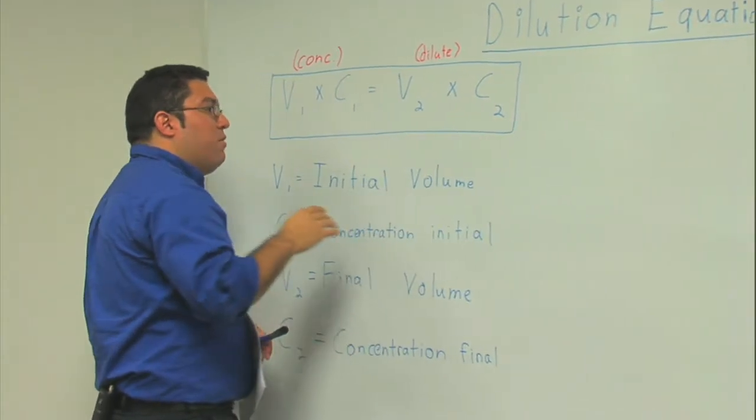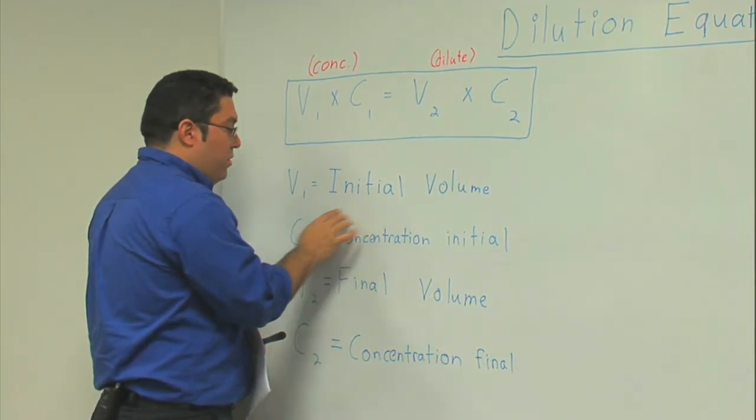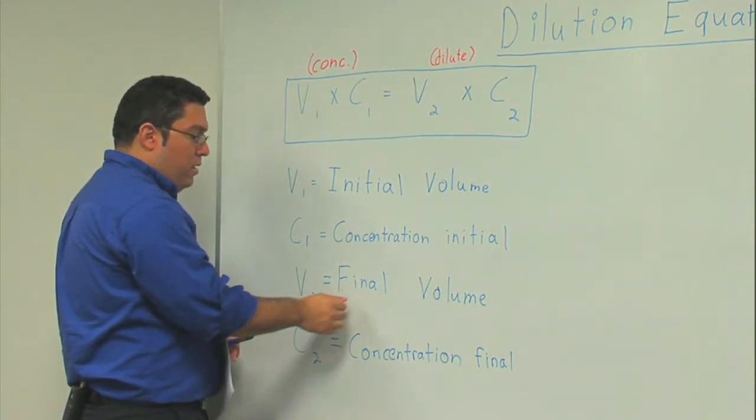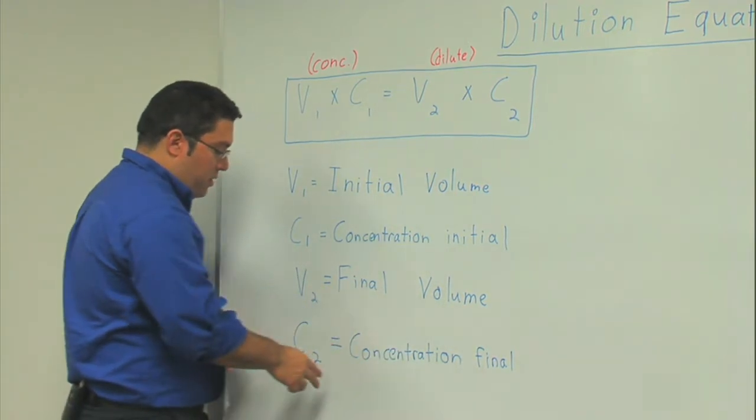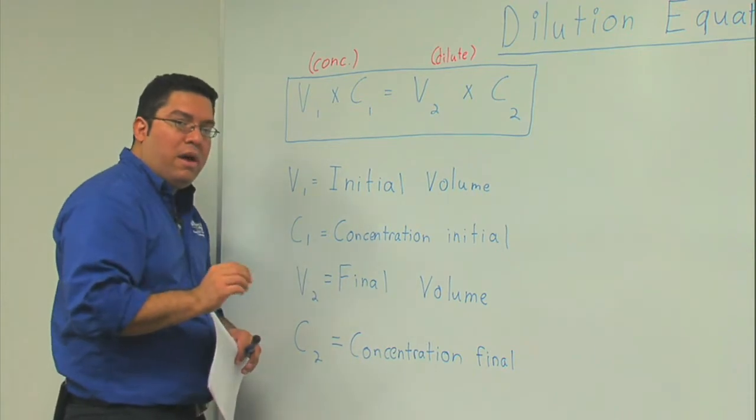We have Volume Initial which is V1, C1 is Concentration Initial, you have V2 which equals Final Volume, and then you have C2 which equals Concentration Final.